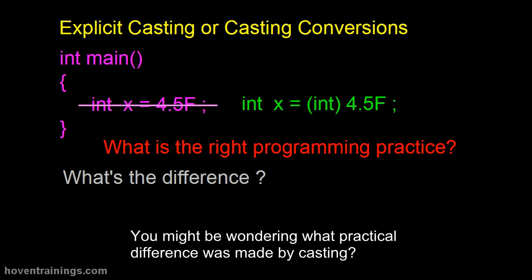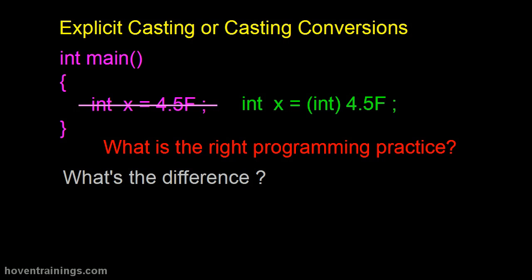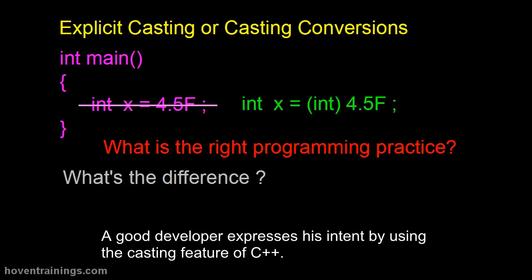You might be wondering what practical difference was made by casting? The answer is, no practical difference at all. In both the cases the variable X gets 4. It's about the developer's workmanship. A good developer expresses his intent by using the casting feature of C++.